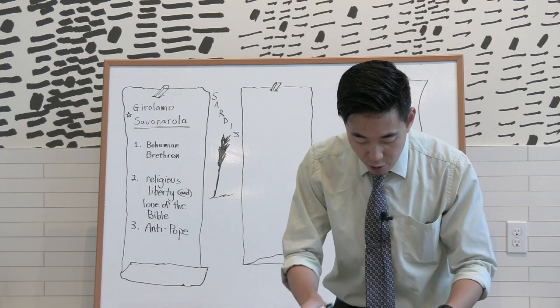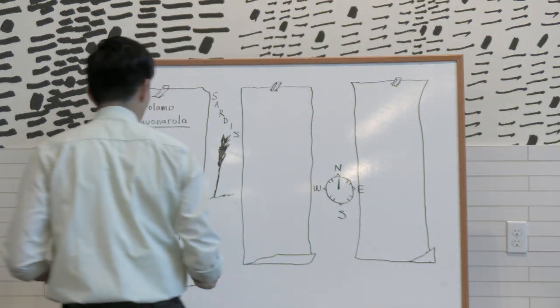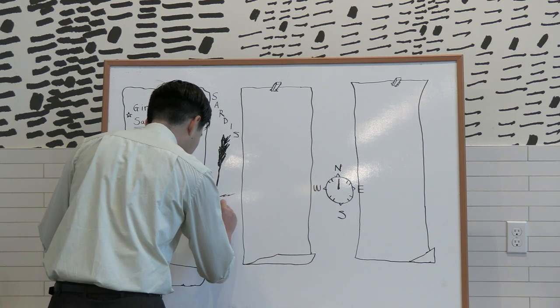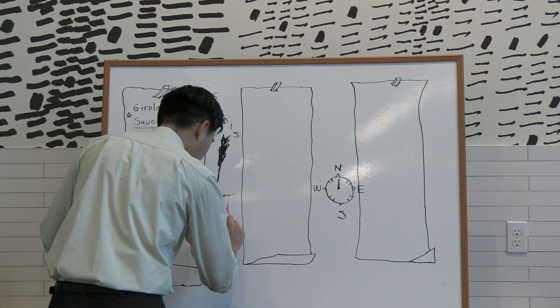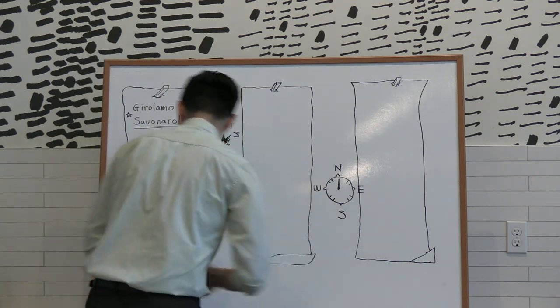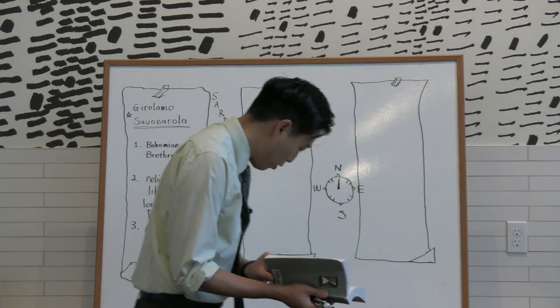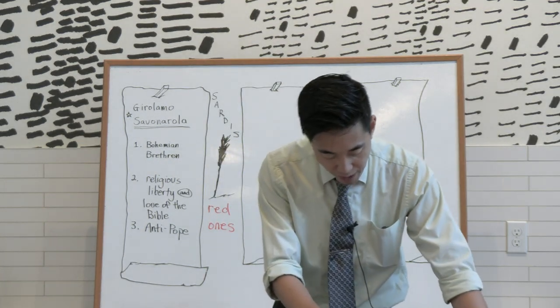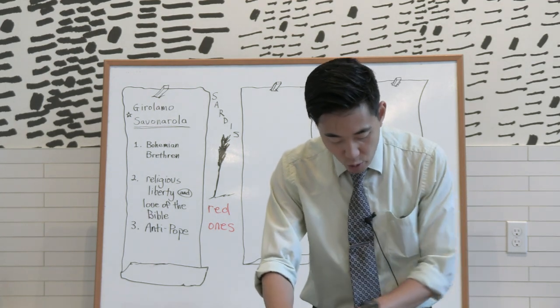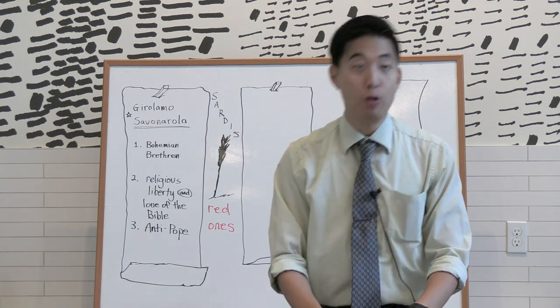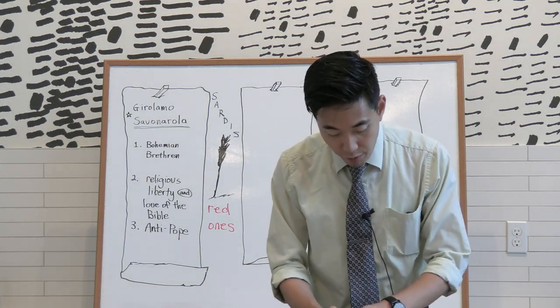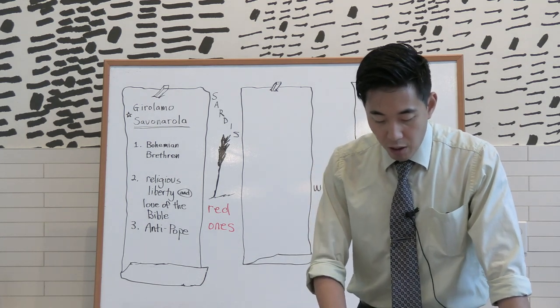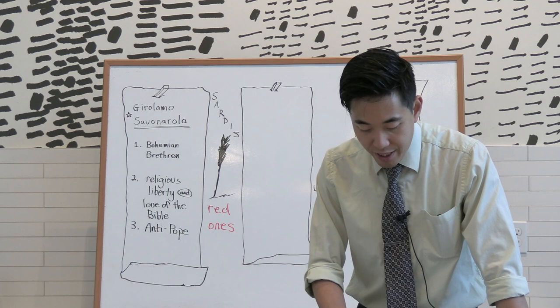During the Sardis period, the red ones, Savonarola had no delusions about the proper place for a Bible-believing Christian who was preaching against the sins of Rome. When he was tortured for two months and then condemned to be burned at the stake, when Savonarola was tied to the stake, the Pope's prelate said to him, I separate thee from the church militant and the church triumphant.